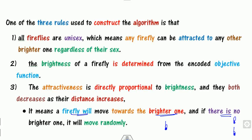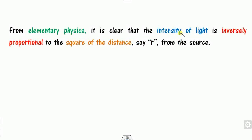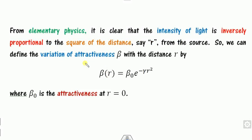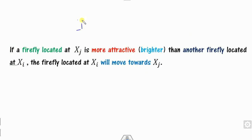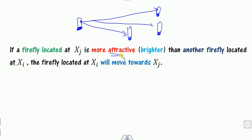As we know from physics, intensity is always proportional to the inverse square of distance. Based on this, we can define the variation of attractiveness beta with respect to distance r. Here, beta-naught is the constant value obtained at r equals zero — the initial condition. A firefly at position xi can be attracted toward any of the surrounding fireflies xj1, xj2, etc., at some distance r.